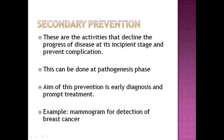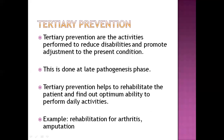An example of secondary prevention is a mammogram for detection of breast cancer. A mammogram is an X-ray of the breast. If we perform a mammogram at an early stage, then breast cancer can be identified early and treatment can be done as quickly as possible. So secondary prevention helps us achieve early diagnosis and prompt treatment.